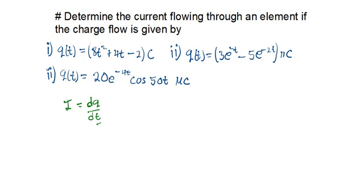So for the first one, the charge is given as 8t squared plus 4t minus 2. To find the current, we are going to take d/dt of what we have here: 8t squared plus 4t minus 2, in Coulombs.